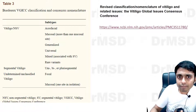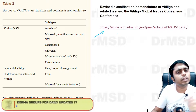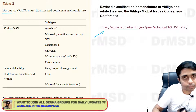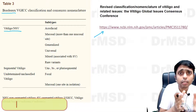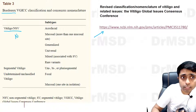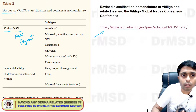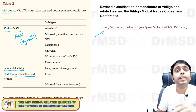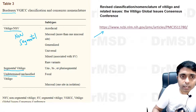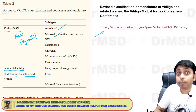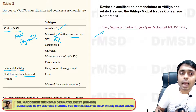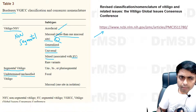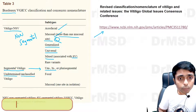In recent times, a newer body of classification is used. If vitiligo is mentioned without qualification it means non-segmental vitiligo (NS). We also have segmental vitiligo, and another category called undetermined or unclassified. Under non-segmental vitiligo: acrofacial, mucosal (more than one mucosal site involved), generalized, universal, mixed, and rare variants. Segmental includes uni-, bi-, or plurisegmental.